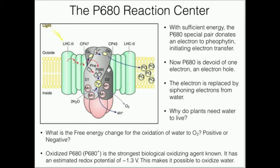The P680 reaction center, in tandem with another enzyme we'll look at in a few slides, ultimately catalyzes the conversion of water to oxygen — the oxygen that we breathe in the atmosphere. When it does that, it takes those electrons to replace the electron hole from the electron donated by the special pair of P680.